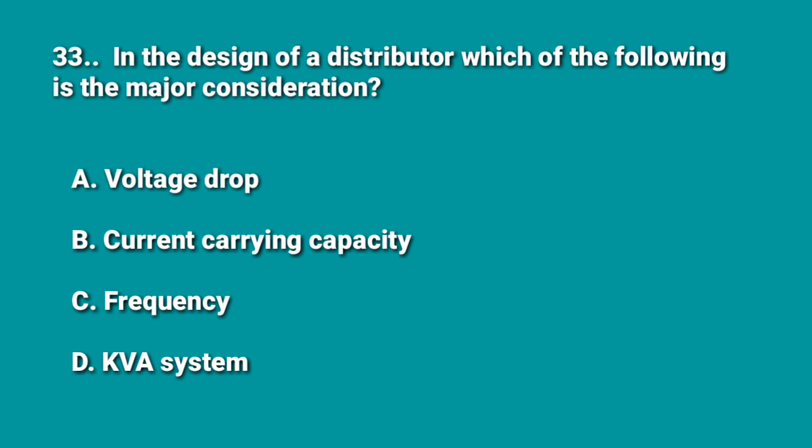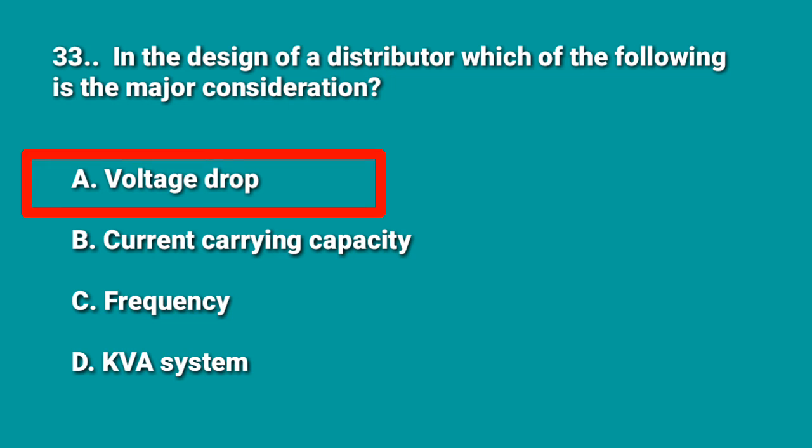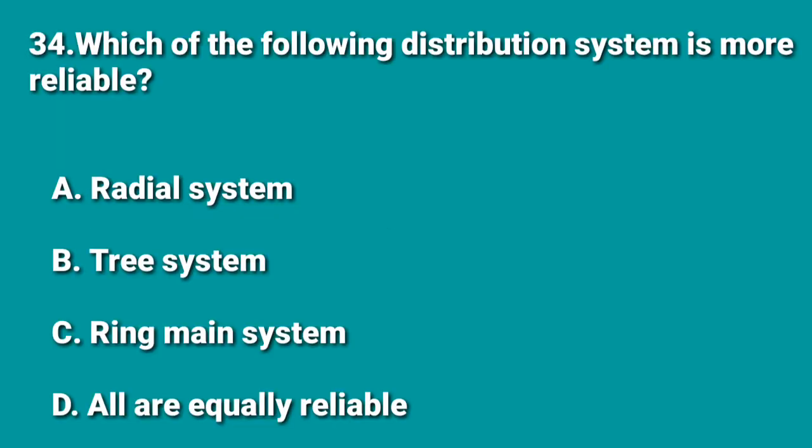In the design of a distributor, the major consideration is voltage drop, whereas for a feeder the main consideration is current carrying capacity. Frequency and kV are not the primary concerns — current carrying capacity is the main focus for a feeder, and voltage drop is the main focus for a distributor.